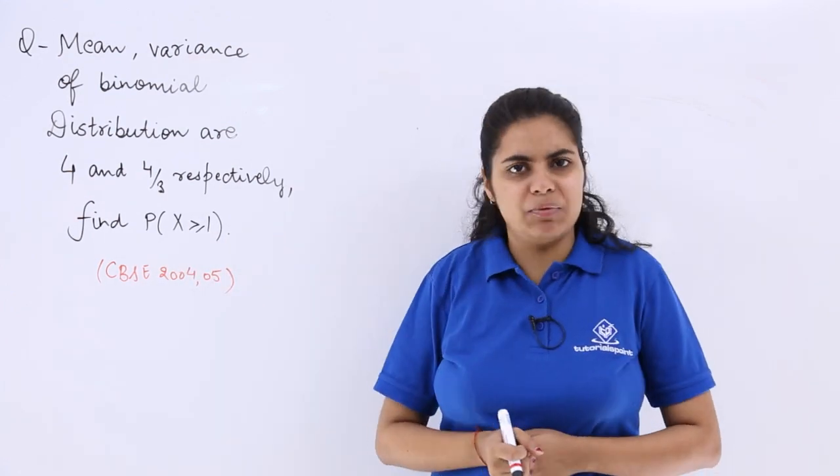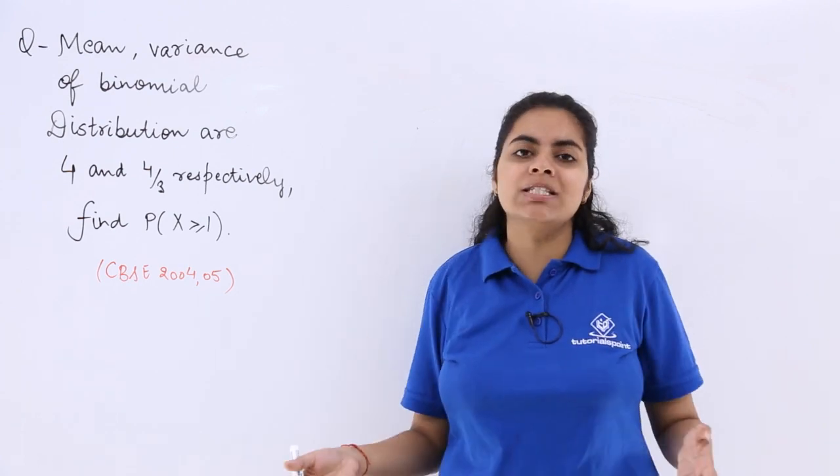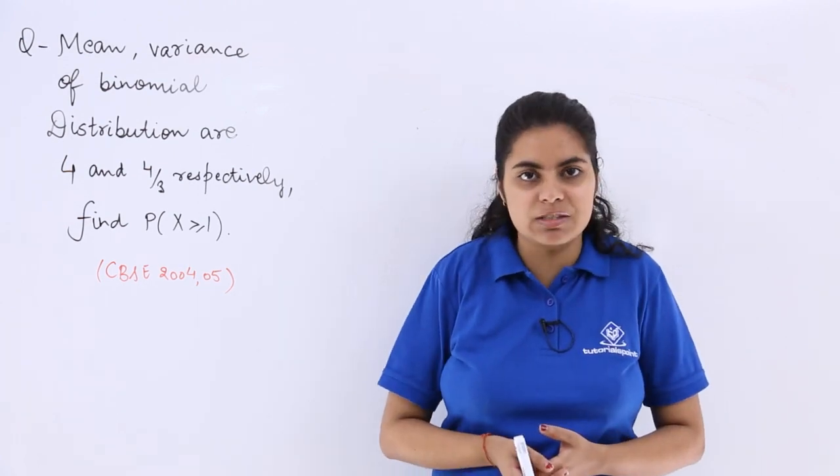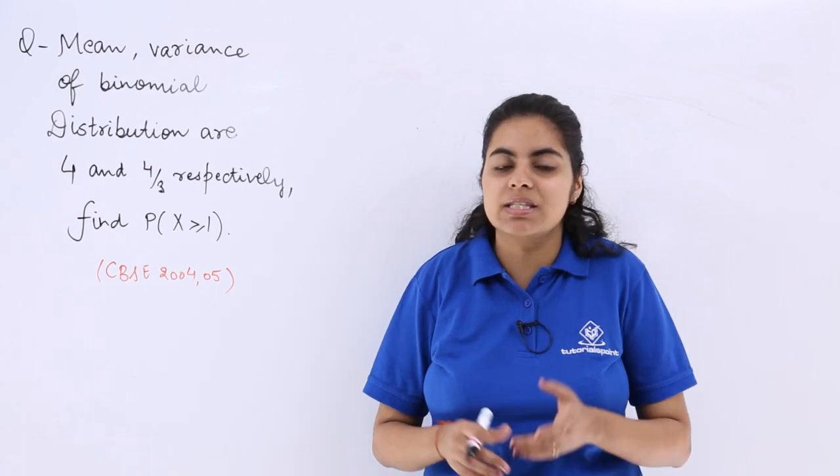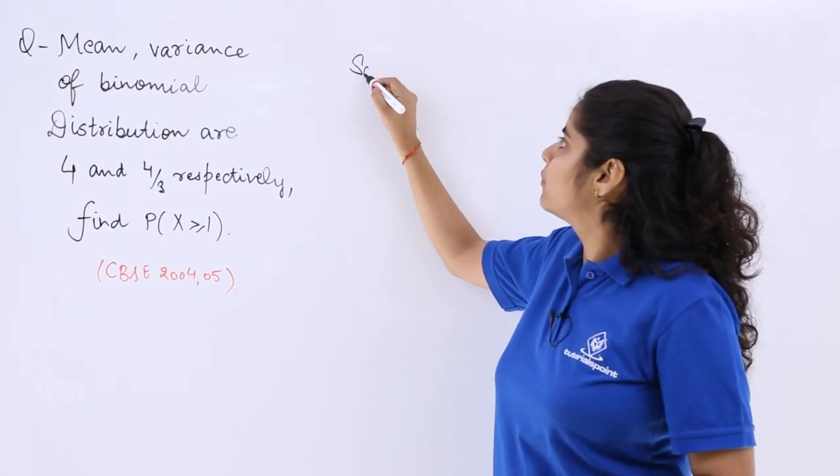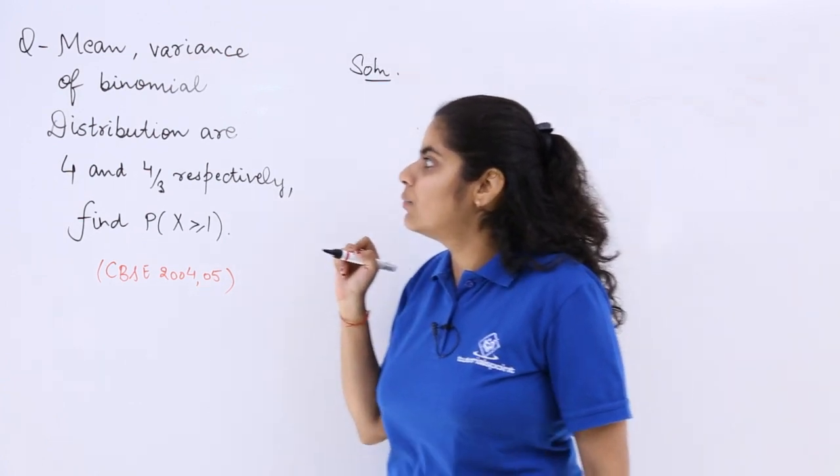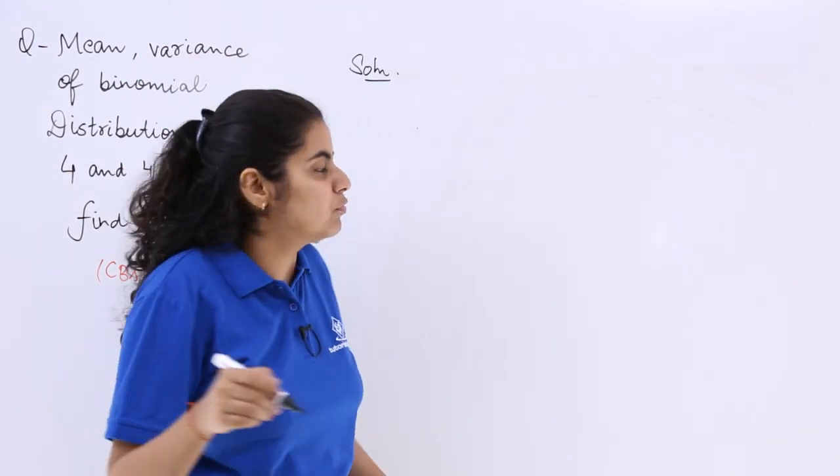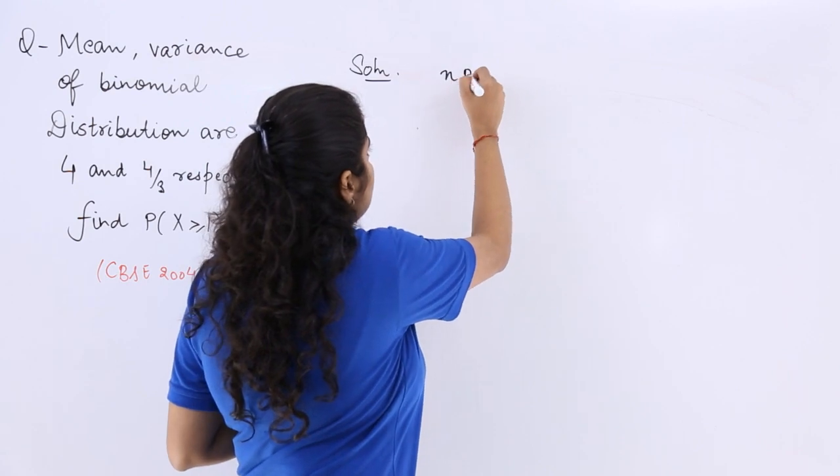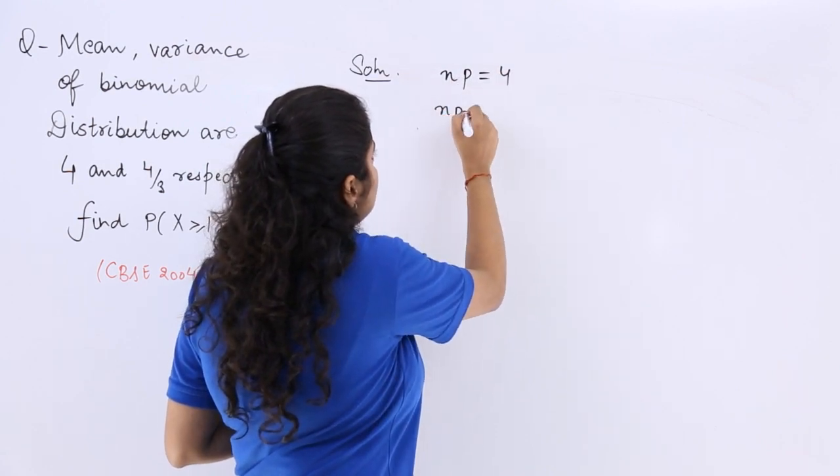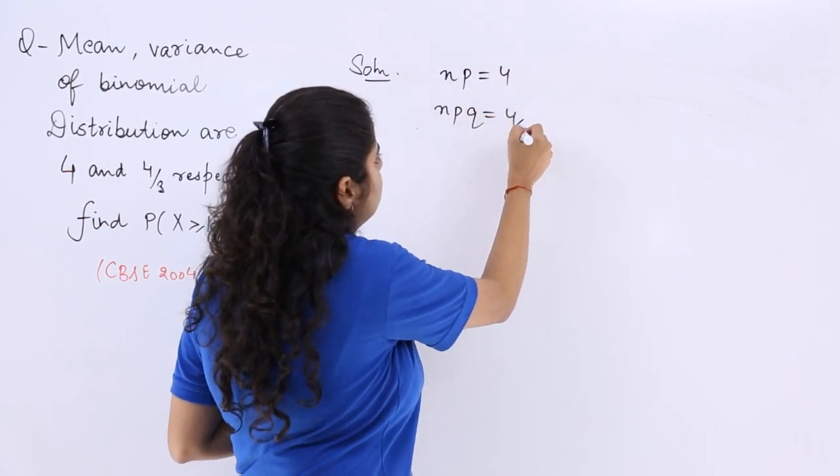So how to solve this type of question? First of all, you must know the formulas which we studied in the previous video about the mean and the variance. So I write solution and let's start solving this question. The mean has been given. Now what is the mean and what is the variance? 4 and 4 by 3. So the mean is NP which is 4. The variance is NPQ which is 4 by 3.